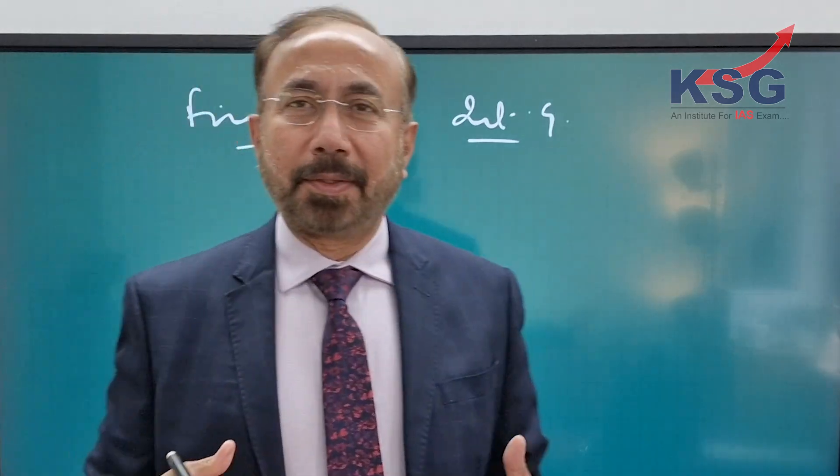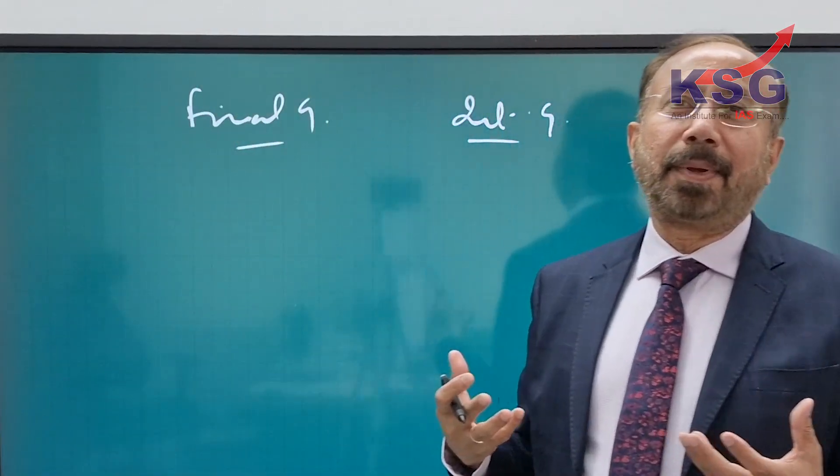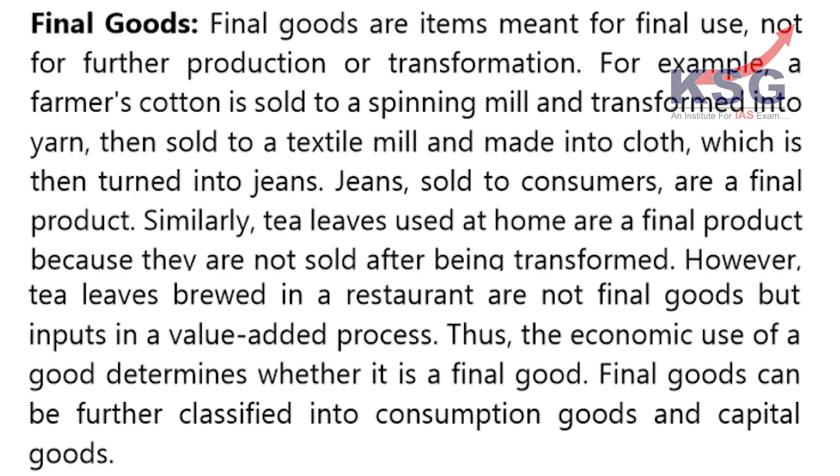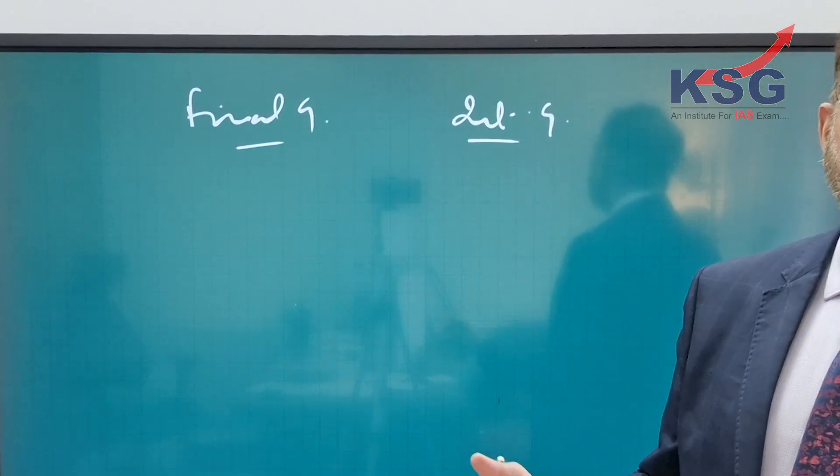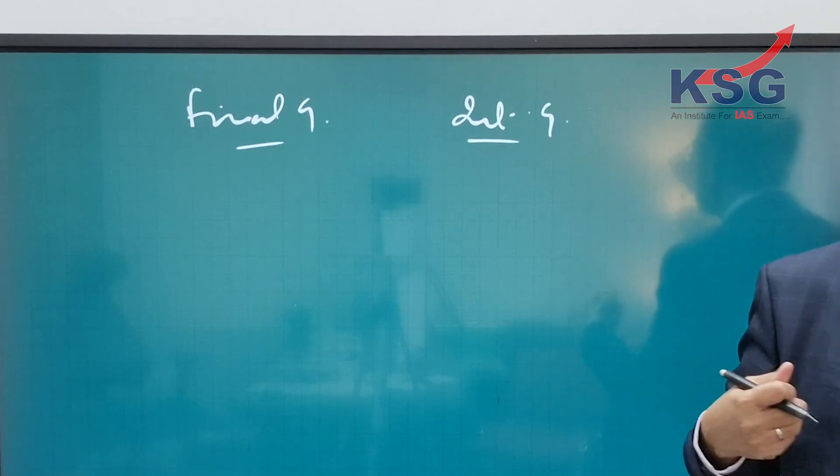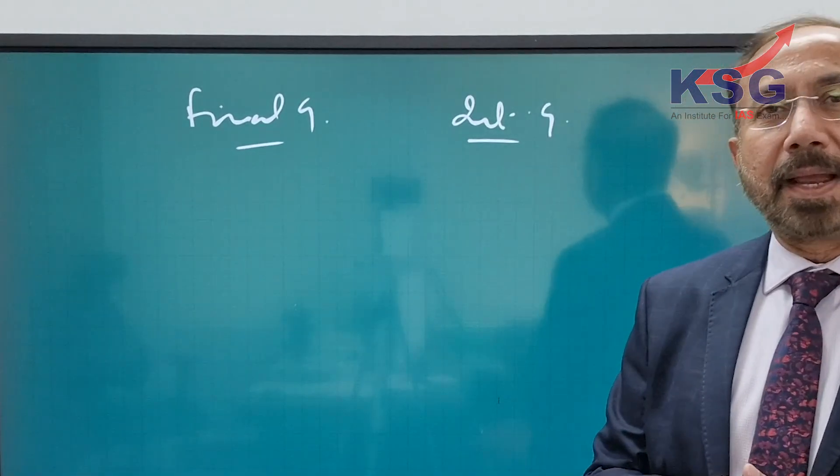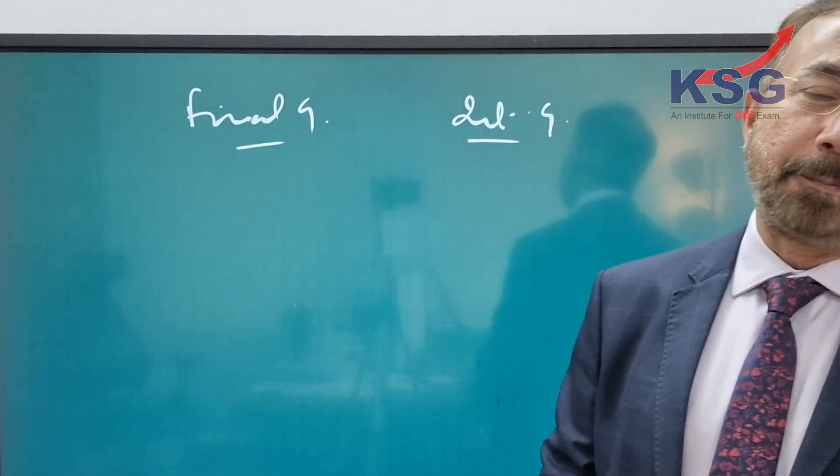Final goods are those goods which are in the hand of the consumer. That means they have gone to a level where they are at the end stage of production, and the person is actually consuming it as the end user.